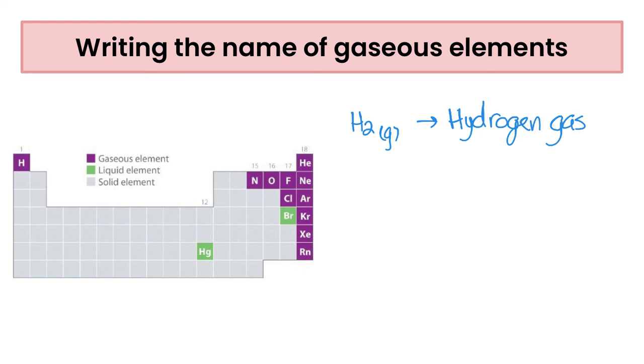fluorine gas, chlorine gas. So we're just taking the element name and we're adding the word gas afterwards. So it would be the element name plus the word gas and that's how you do it.